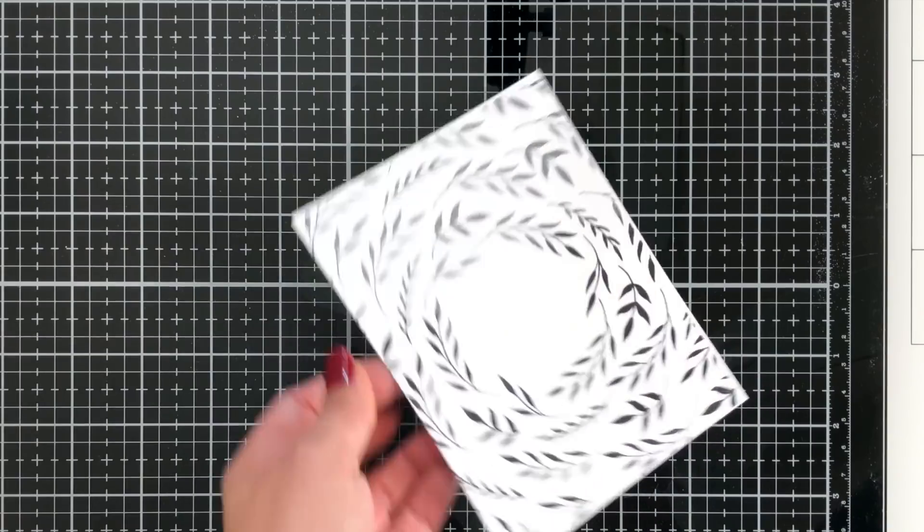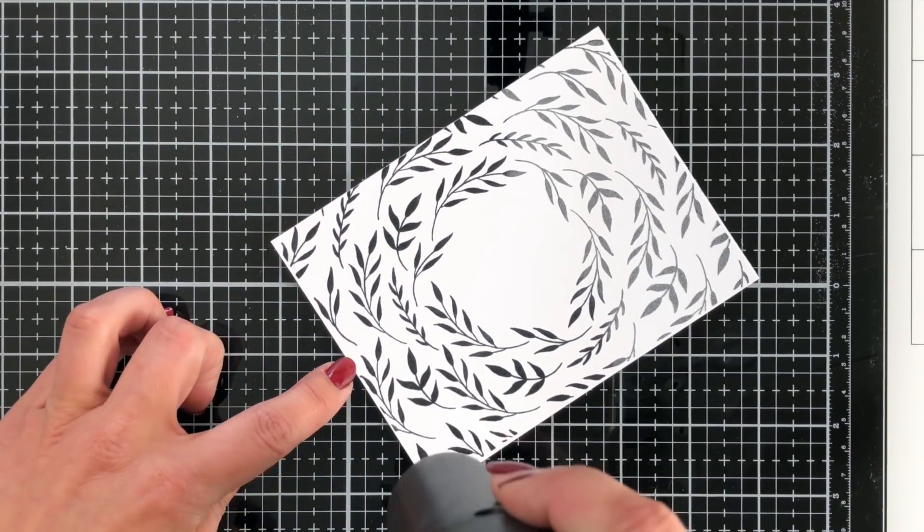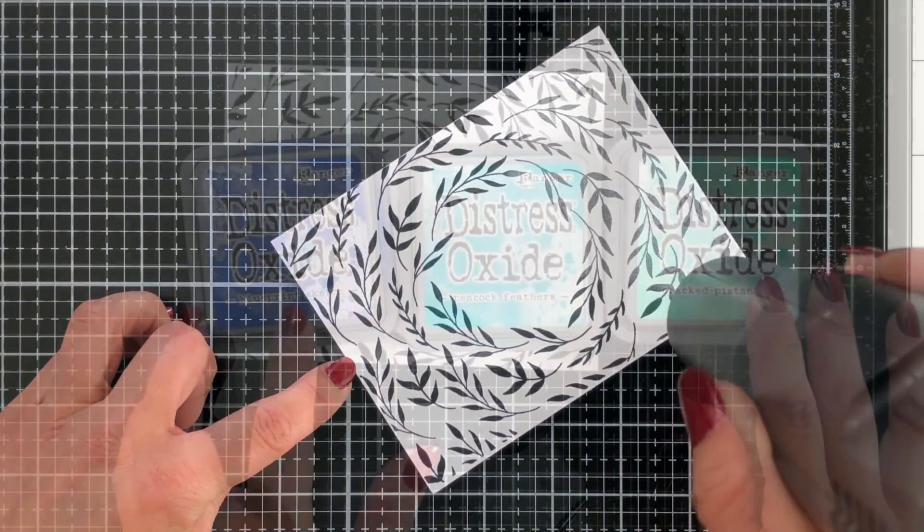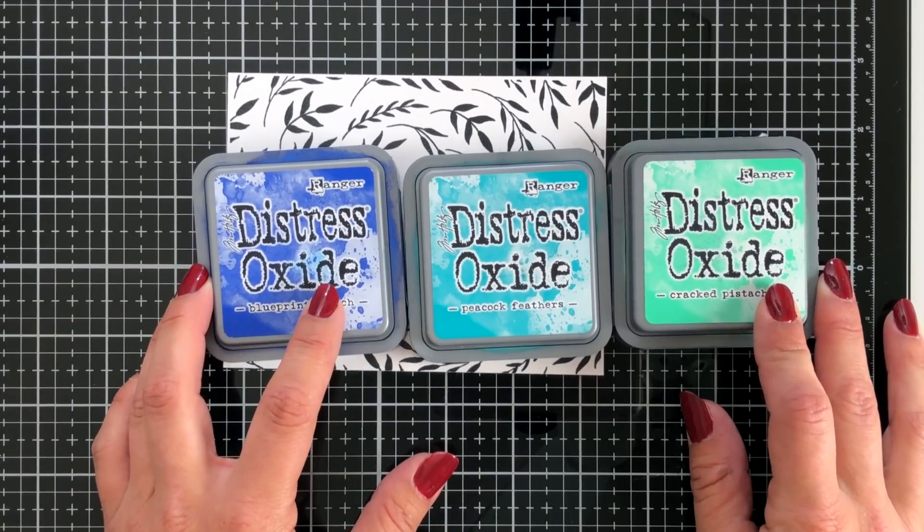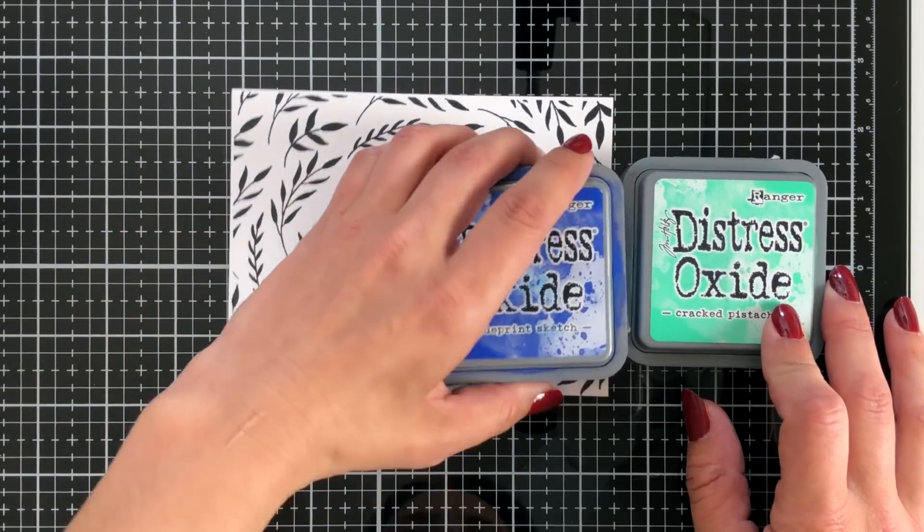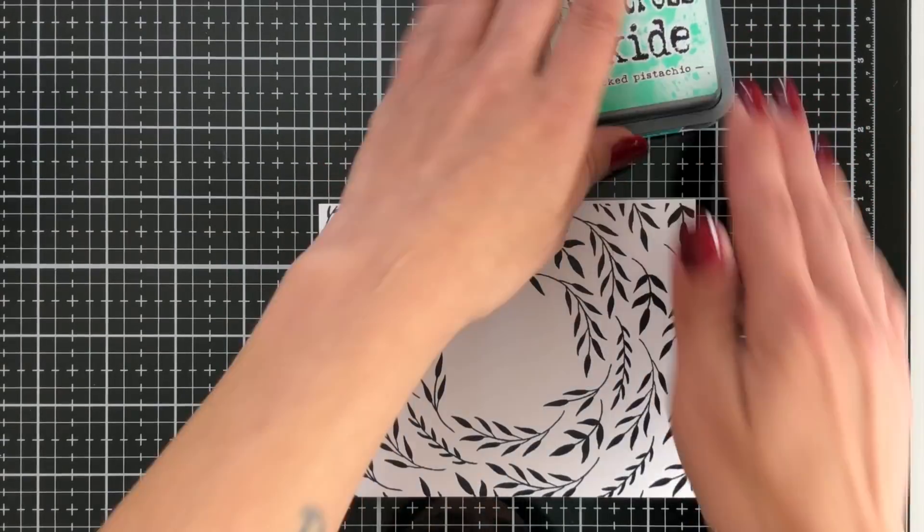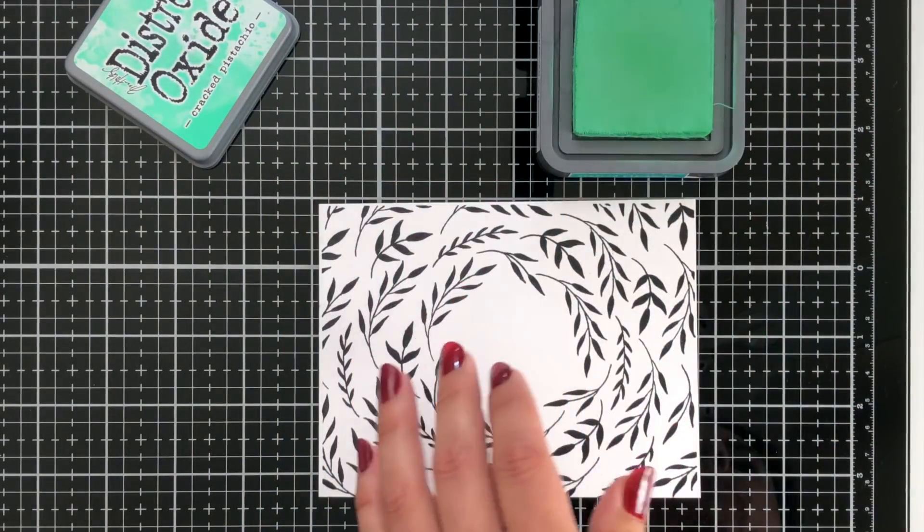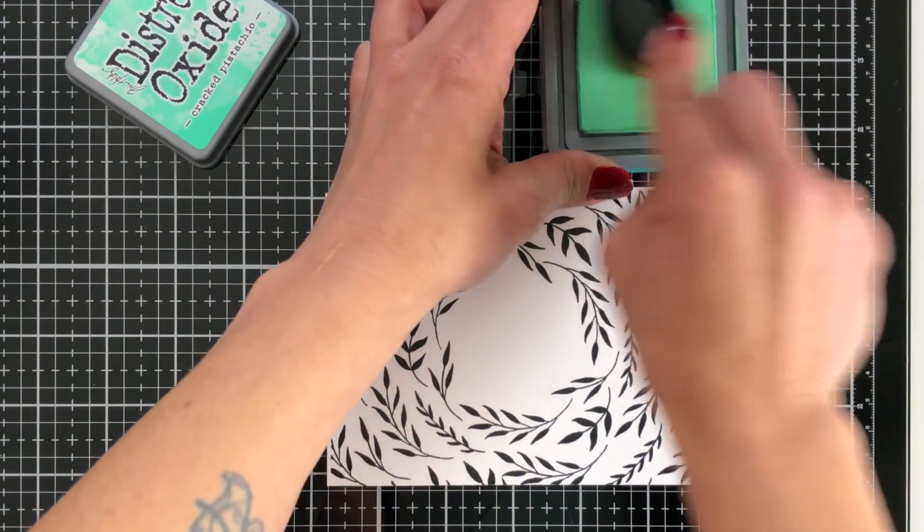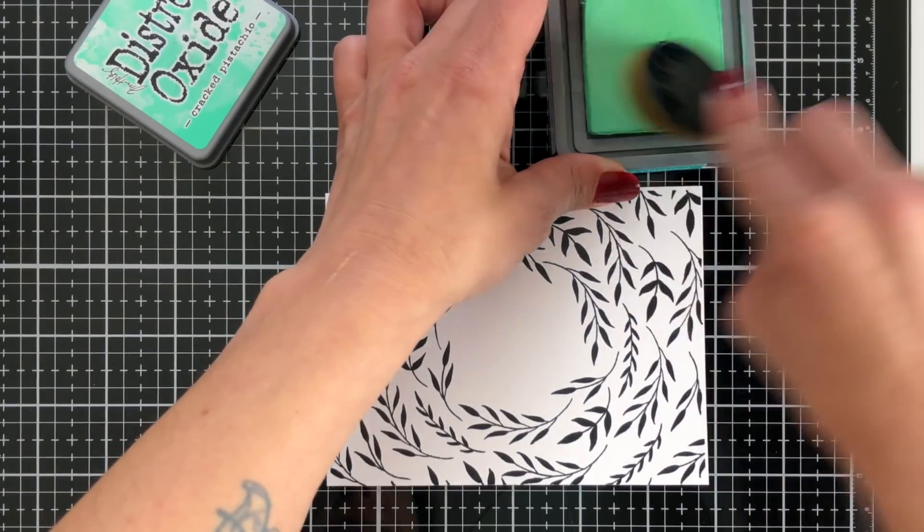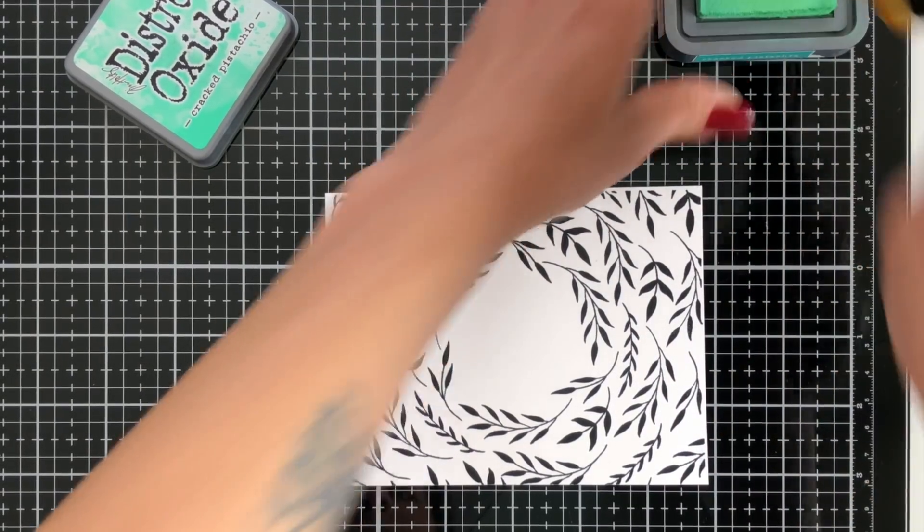Once that has cooled off and I wiped off any excess powder that I may have had, I'm going to be doing some ink blending which is why I had stamped this on Bristol Smooth cardstock. So I'll be using the blueprint sketch, peacock feathers and cracked pistachio. I'm starting off with that cracked pistachio in the middle of the card. That's going to be kind of my highlight area.